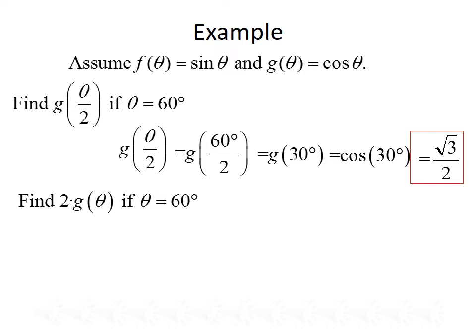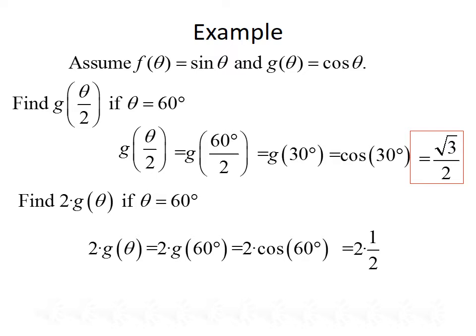Next, let's find 2 times g of theta if theta is again equal to 60 degrees. We're considering 2 times g of theta. Plugging in 60 degrees gives us 2 times g of 60 degrees, which is 2 times the cosine of 60 degrees. From our table, cosine of 60 degrees is 1 half, so we have 2 times 1 half, which simplifies to 1.